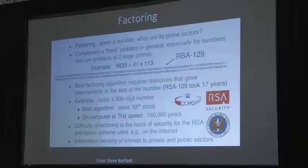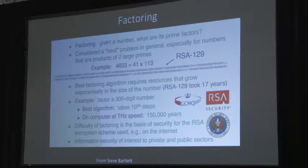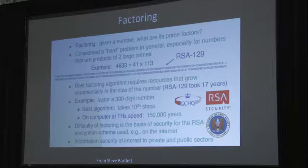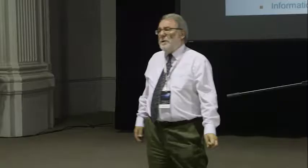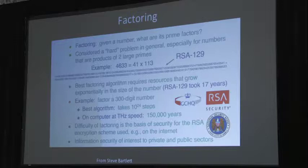So the best factoring algorithm that you can think about, a kind of Euclidean one, to factor RSA 129 took 17 years on classical machines all ganged up together. So a 300 digit number takes really quite a long time to do. The best algorithm for factoring a 300 digit number would take 10 to the 24 steps. So at a terahertz clock speed, that would take 150,000 years. So with a classical machine, what you can say is that because this problem is hard, there is a cover time for that particular number of 150,000 years.